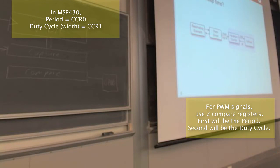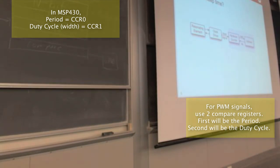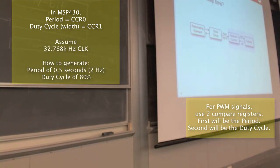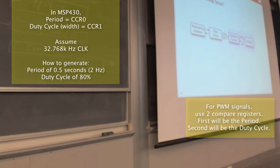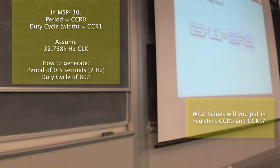In the MSP430, the period register is CCR0 and the width register is CCR1. Assume you have a 32.768 kHz clock. How can we generate a period of 2 Hz with an 80% duty cycle? Work out two numbers: what you'd write into CCR0 for the period, and what you'd write into CCR1 for the duty cycle.